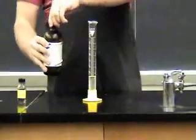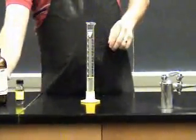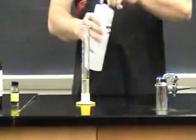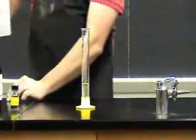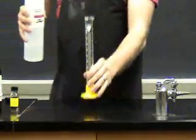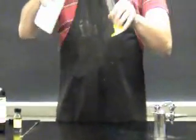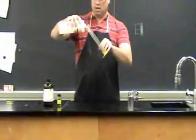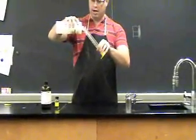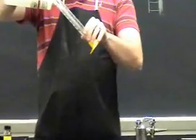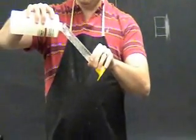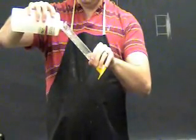Step two: slowly, very slowly, add ethanol on top of the acid. It needs to form a layer. If you add it too fast, it will boil.